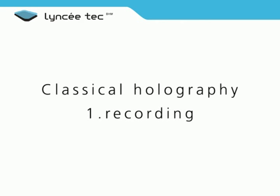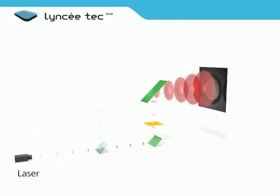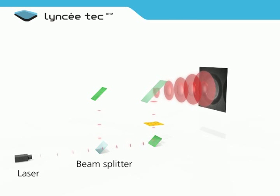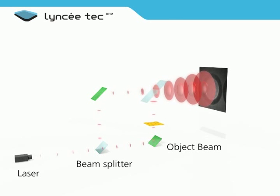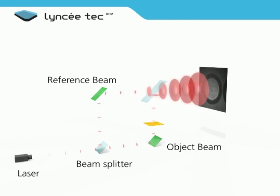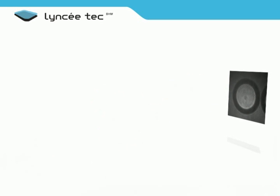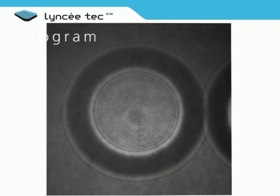In holographic microscopy, the beam from a coherent light source, or laser, is split into two beams: one illuminating the object itself and the other providing a reference beam which, when recombined with the other beam, creates a phase interference that is registered onto the hologram plate.